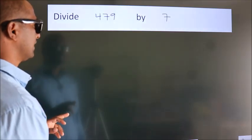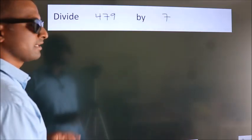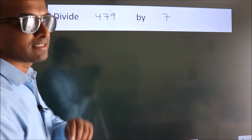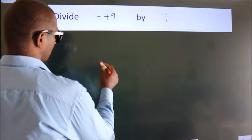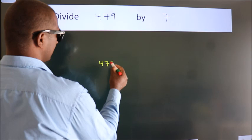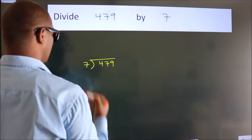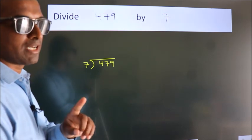Divide 479 by 7. To do this division, we should frame it in this way: 479 here, 7 here. This is your step 1.